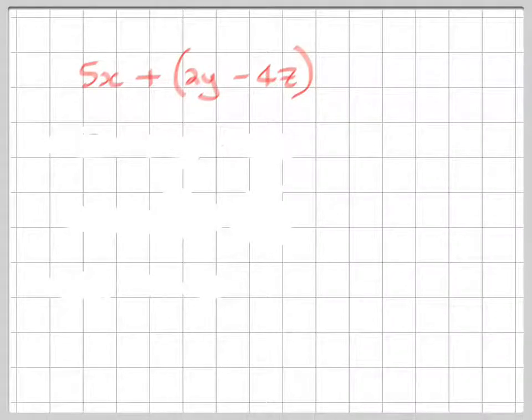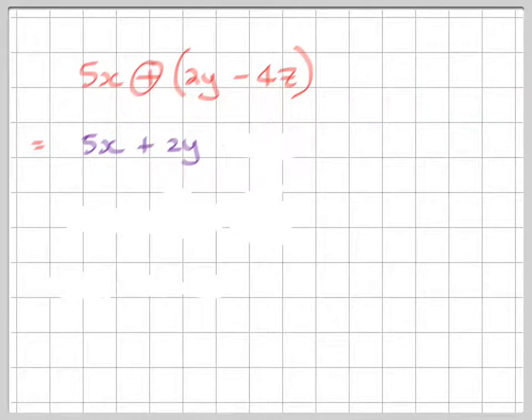Here we have 5x plus 2y minus 4z in the parentheses. So let's have a look at how the signs change accordingly. We've got 5x and then it's a plus and a plus. So those two pluses are not going to change the sign. 2y becomes 2y. And then we've got a plus and a minus.